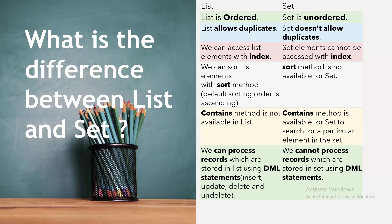We can sort List elements using the sort() method, but the sort method is not available for Set. The contains() method is not available for List, but it is available for Set — you use it to search for a particular element within a Set.